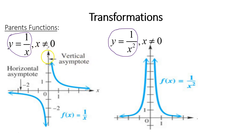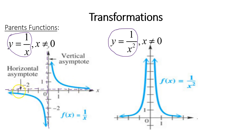For the function 1 over x, the y-axis serves as a vertical asymptote — a vertical line that the graph will never ever cross. The x-axis serves as a horizontal asymptote, which the graph will never cross either. The intersection of the vertical and horizontal asymptotes creates four regions. There's a curve in the top right region that approaches the asymptotes but never officially touches them, and another curve in the bottom left region that hugs those asymptotes, gets really close, but never actually touches them.